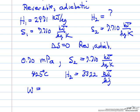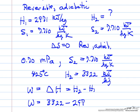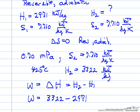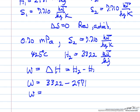And then the work for a flow system, adiabatic, is just delta H, so that's H2 minus H1. So the work is the final enthalpy minus the initial incoming enthalpy: 3322 minus 2971 equals 351 or approximately 350 kilojoules per kilogram.